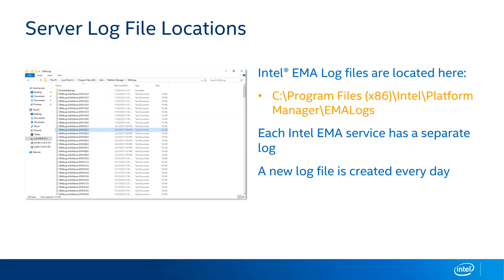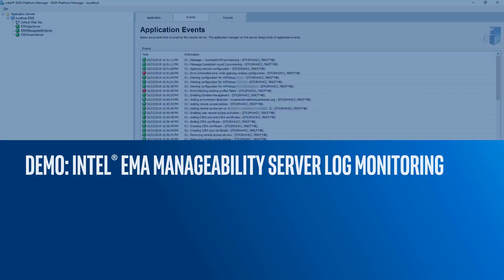We write our server logs to disk as well as making them available in the Intel EMA Platform Manager. If you'd like to import those logs into another log management or aggregation tool, you can do so. The logs are found in the C:\Program Files (x86)\Intel\Platform Manager\EMMA\Logs directory. There'll be a separate log for each of the EMA services, and new log files are created every day. Let's take a look at the Intel EMA Platform Manager and give some examples of following the logs and watching a system with AMT configure.